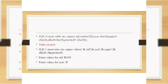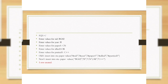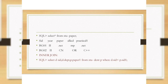Create a student paper table with columns: id, year, paper one, allied one, practical one. Table created. Insert into student paper values: id, year, paper one, allied one, practical one. Rows are created. Select star from student paper — viewing the table.